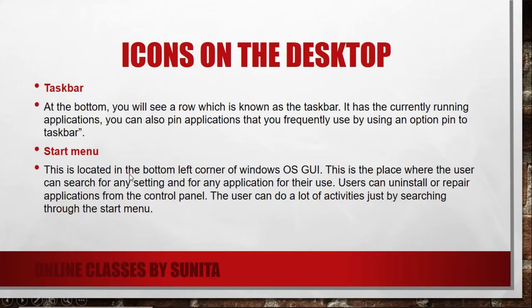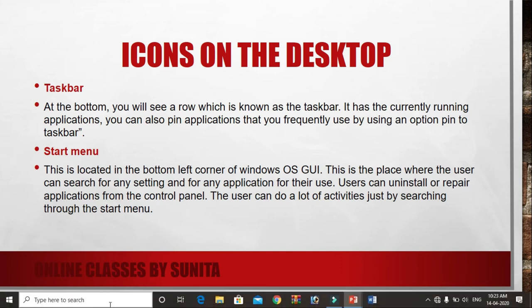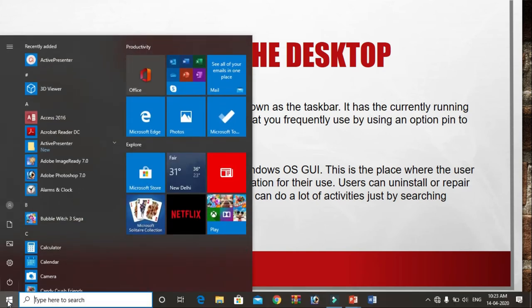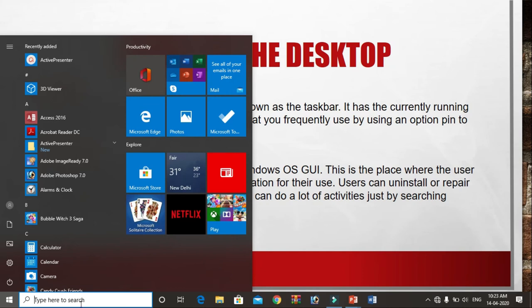Next is the Start Menu. It is located in the bottom-left corner of the Windows operating system GUI (Graphical User Interface). This is the place where the user can search for any setting or application. On the left side of the taskbar is the Start Menu. If you click on the Start Menu, you will see which applications you can use — for example, Adobe Photoshop or whatever application you have installed, you can search for it here.